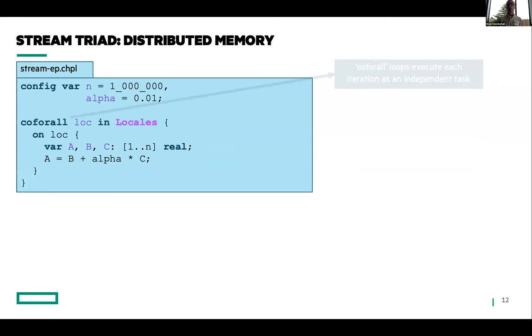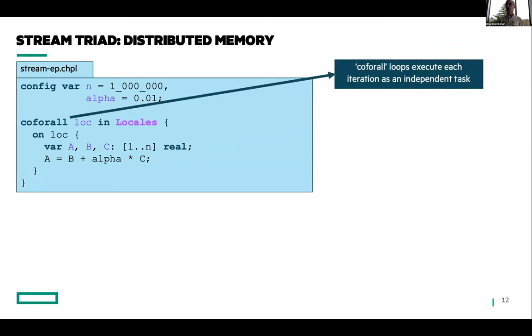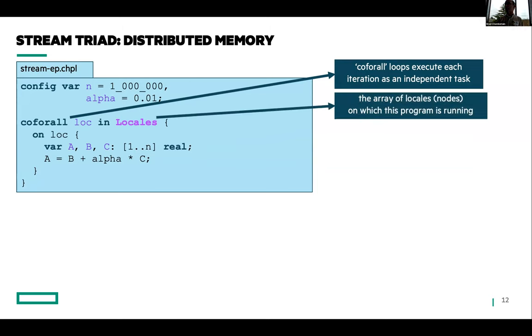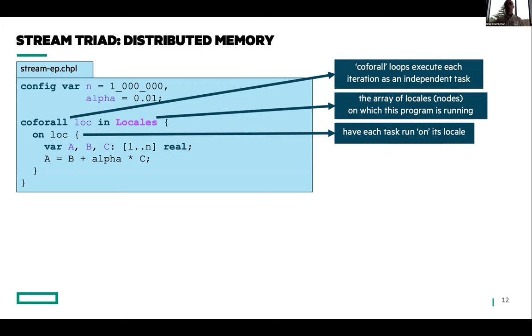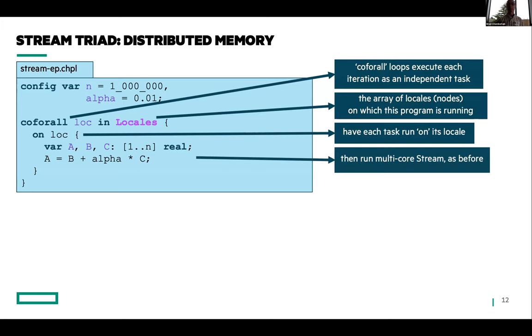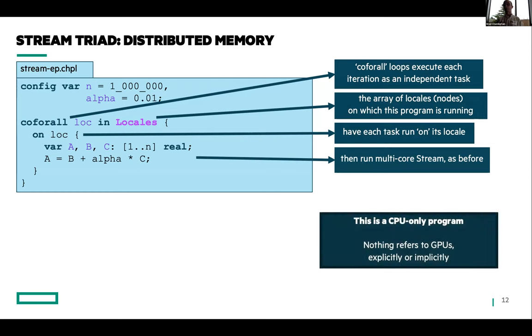But I can amend that if I throw in this additional loop. This coforall loop is a loop that executes each iteration as a distinct task. This locales array represents the compute nodes on which my program is running. And this on clause says this task should run on this locale. So here, what I've done is basically fire off a task per compute node that I'm running on. And then each of those tasks is going to run my multicore stream like before. So I'm now using all of the cores across all the compute nodes of my supercomputer or cluster. But this is a CPU-only program. This is what we've been running for decades now. Nothing here refers to GPUs.